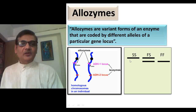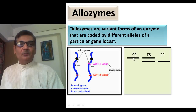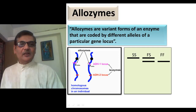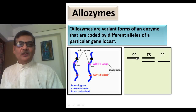In this picture, you can see a gel picture where the protein bands are shown. Here is a band considered as SS, which shows the genotype. It means on both homologous chromosomes the alleles were SS and SS. Because of this, a single band appears here. By seeing this band, one can know the genotype of the individual, which is SS.